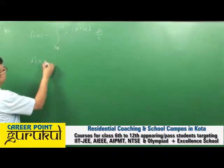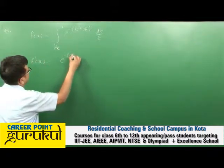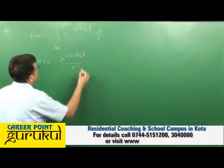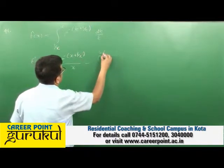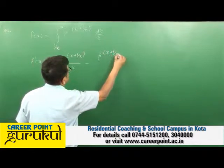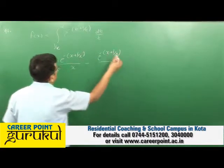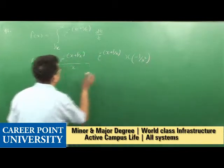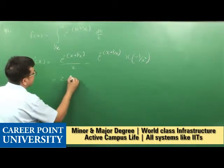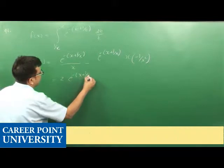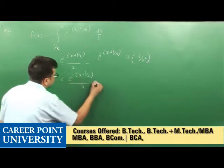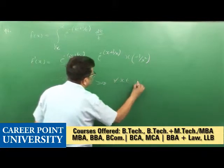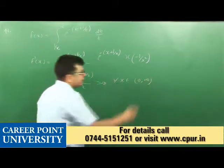f'(x) is equal to e raised to power -(x + 1/x) upon x, minus e raised to power -(x + 1/x) into x into (-1/x²), which equals 2·e^(-(x+1/x)) upon x.